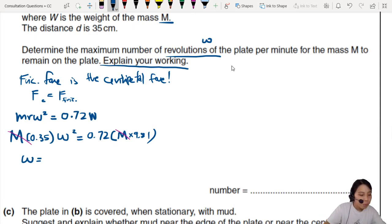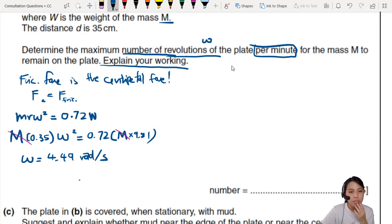The nice thing is you can cancel out the M's. Divide both sides by M. Now we can find what our omega is. After some calculation, omega should be 4.49 radians per second. What do we want? They want number of revolutions per minute.